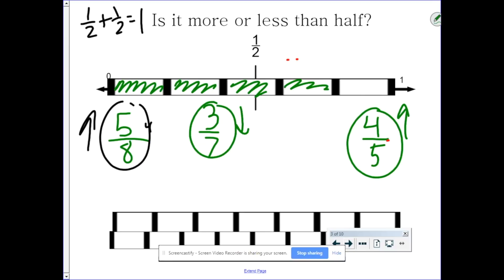Three-sevenths was smaller than one-half. Four-fifths is greater than. And using the symbols, we'd say five-eighths is greater than half. Three-sevenths is less than half. And four-fifths is greater than one-half.